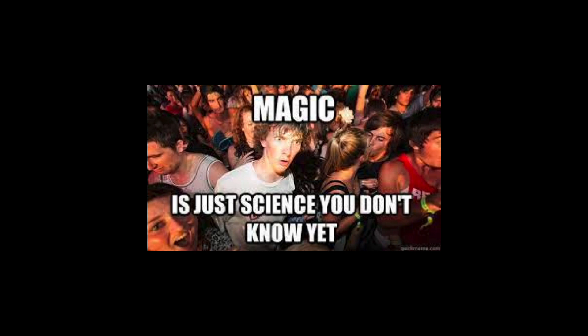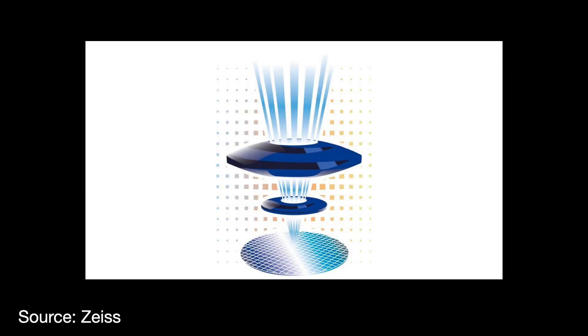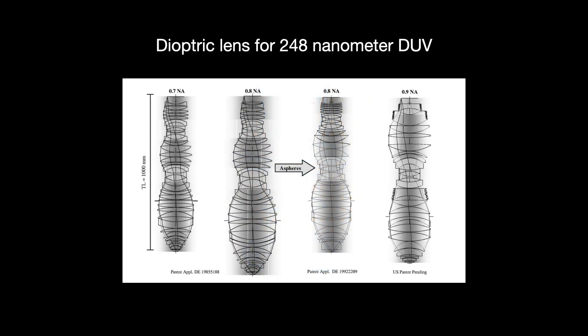And finally, the optics. We cannot discuss an ASML lithography machine without also mentioning the Zeiss optics. Zeiss had to develop a brand new optic system for the immersion machine. The old DUV machine had used an optic system made up of just refractive or dioptric lens.